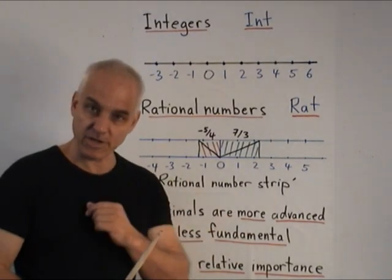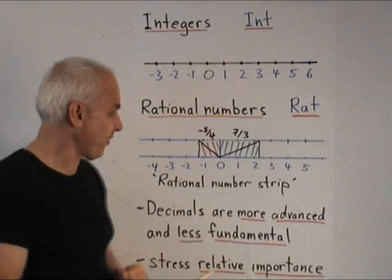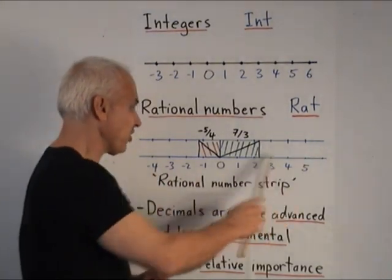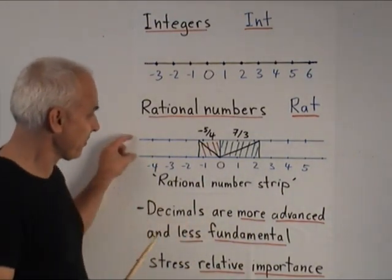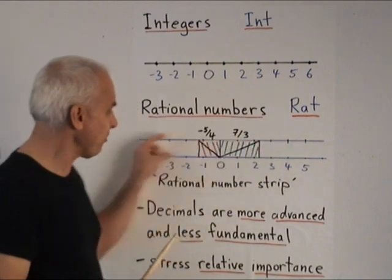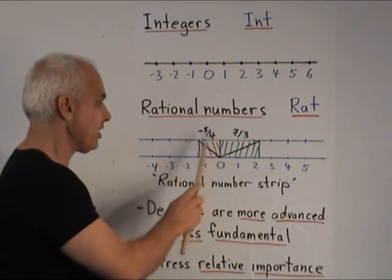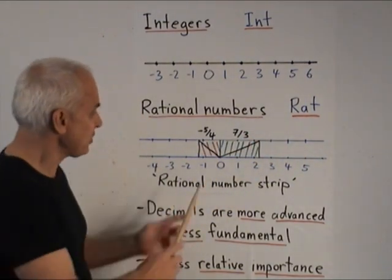The rational numbers are much like fractions. And I think it's better to think about them in a two-dimensional context rather than in a one-dimensional context. So I prefer that you do not think in terms of a rational number line, but rather in terms of a rational number strip. That's a strip that extends in both directions, which is one unit high.